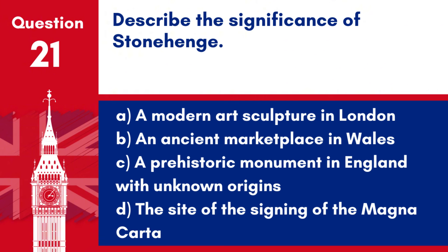Question 21. Describe the significance of Stonehenge. a. A modern art sculpture in London. b. An ancient marketplace in Wales. c. A prehistoric monument in England with unknown origins. d. The site of the signing of the Magna Carta.